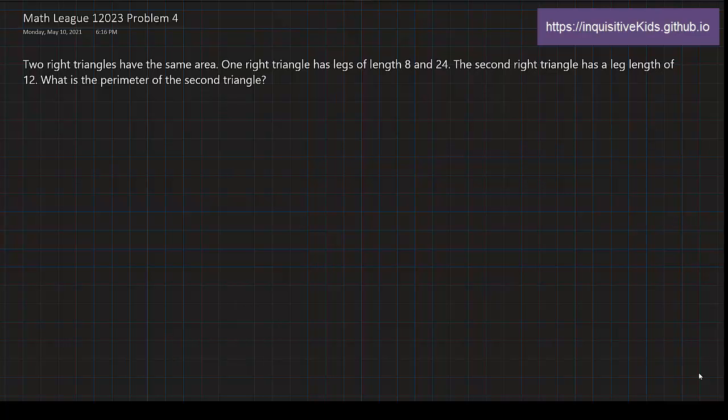Now, here's problem four. Two right triangles have the same area. One right triangle has legs of 8 and 24. The second right triangle has a leg length of 12. What is the perimeter of the second triangle?